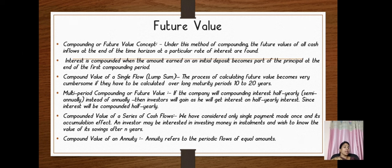Under future value, you will be finding the future value of money. The present value and rate of interest will be given, and you have to find out the value of money in the future — this is called compounding or the future value concept. Under this concept, we have: compound value of single flow, multiple period compounding or future value, compounded value of series of cash flows, and compounded value of annuity.